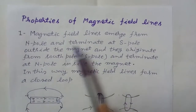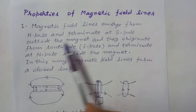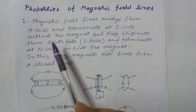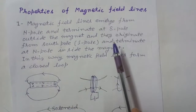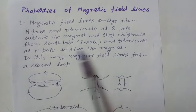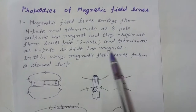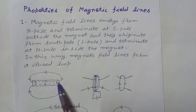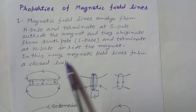Properties of magnetic field lines: magnetic field lines emerge from the north pole and terminate at the south pole outside the magnet. They originate from the south pole and terminate at the north pole inside the magnet, traveling from south to north inside. In this way, magnetic field lines form a closed loop.